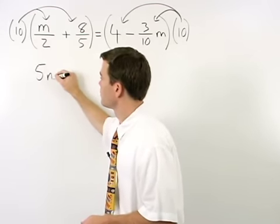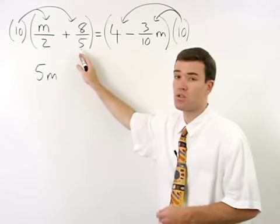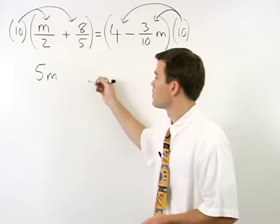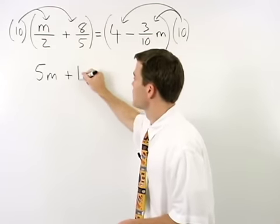When we multiply 10 times 8 over 5, the 10 and 5 reduce to 2 and 1, so we have 2 times 8, which is positive 16.